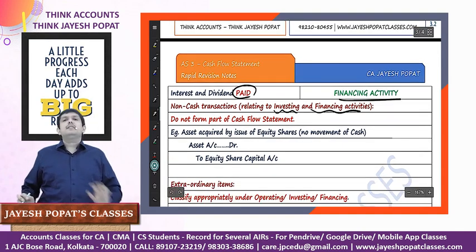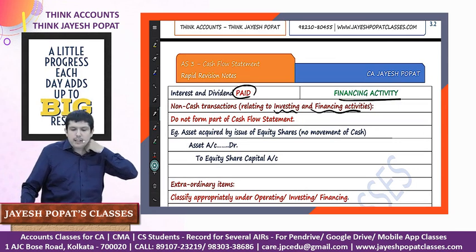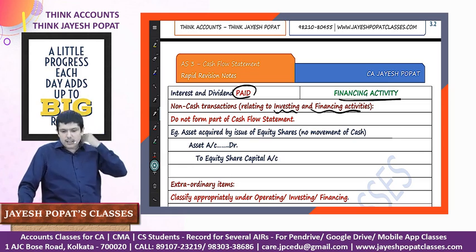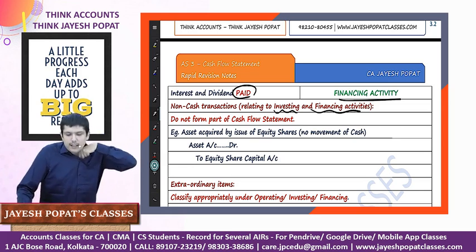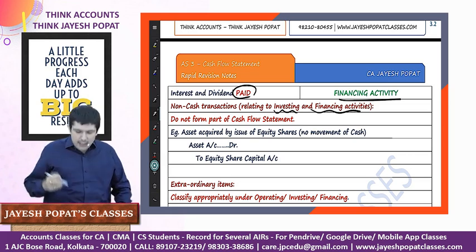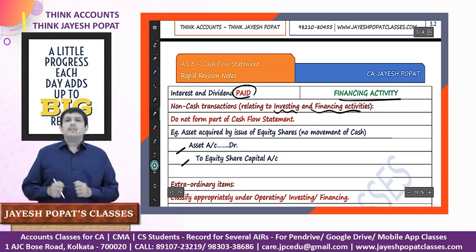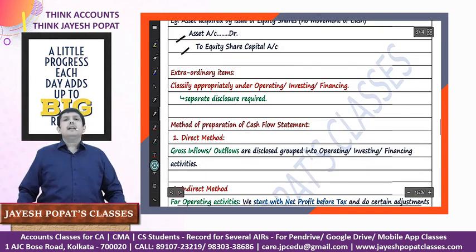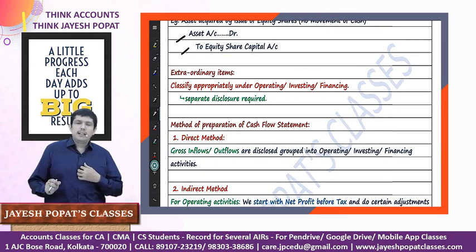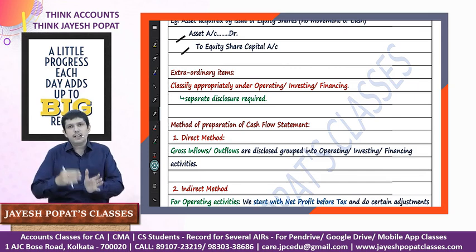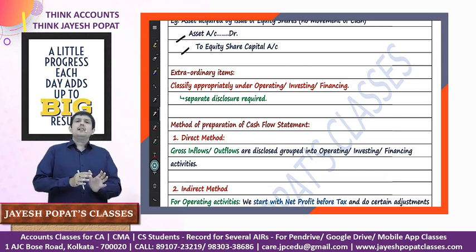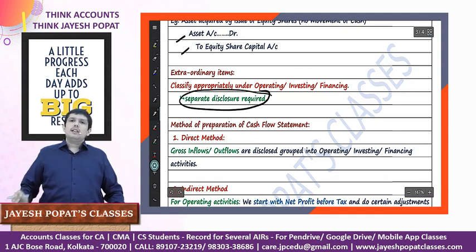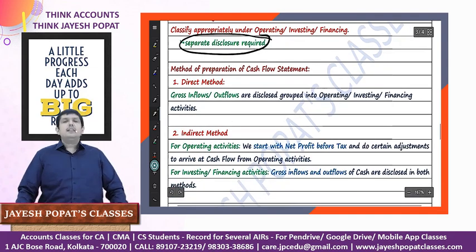Non-cash transactions relating to investing and financing activity will have no place in the cash flow statement because there is no movement in cash. An example is an asset acquired by issue of equity shares - where asset is debited and equity share is credited - there is no movement of cash and cash equivalents, so it does not form part of the cash flow statement. For extraordinary items: if it relates to operating activity it is shown under operating, financing under financing, investing under investing - but a separate disclosure of the extraordinary item must be made under the respective category.